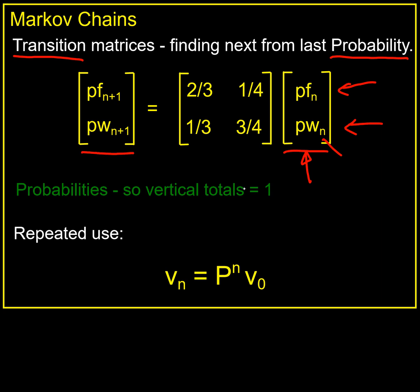If I want to find out what the properties are for the next day, I multiply by my transition matrix made up of probabilities. Because it's made up of probabilities, the totals for the columns must equal one - two thirds plus one third is one, one quarter plus three quarters is one. And I can repeatedly apply this approach.